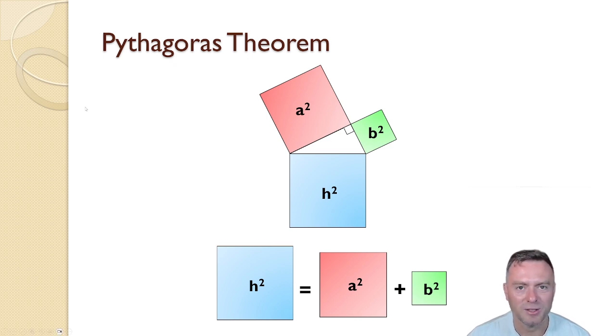Similarly, if we're trying to find one of these smaller sides, so the b or the a over here, if we want to find the a, that would be a squared would equal to the hypotenuse squared minus the b squared. So that's another thing that we need to consider.